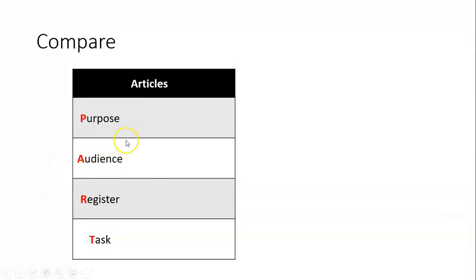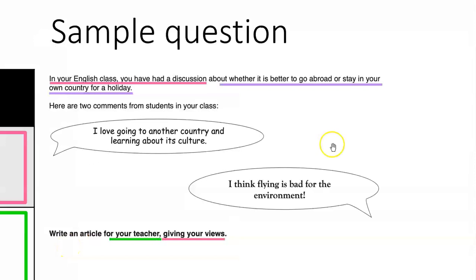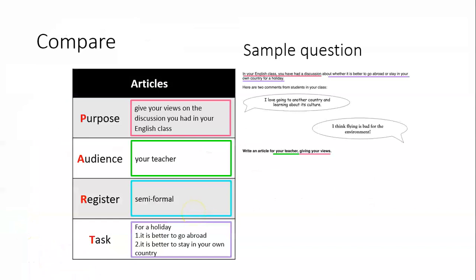Now we're going to compare the purpose, audience, register and task of the three exercise six text types — article, review and report. For articles, here is a sample question: In your English class you had a discussion about whether it is better to go abroad or stay in your own country for a holiday. Two student comments are given: 'I love going to another country and learning about its culture' and 'I think flying is bad for the environment.' Write an article for your teacher giving your views.